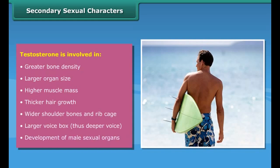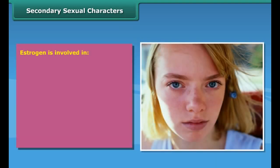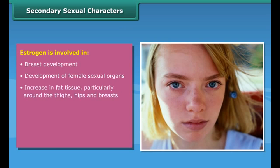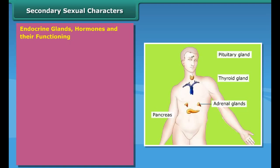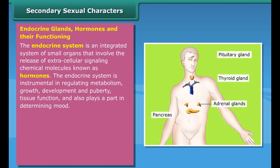Secondary sexual characters distinguish males and females in different ways and are expressed in an adolescent during the onset of puberty. Characteristics such as breast development, voice pitch, or facial hair distinguish the sexes from each other. The appearance of these characteristics is influenced by the secretion of hormones — chemical substances secreted by the endocrine glands. In males, testosterone is the hormone initiating the secondary sexual characters; estrogen is responsible for secondary sexual characters in females.